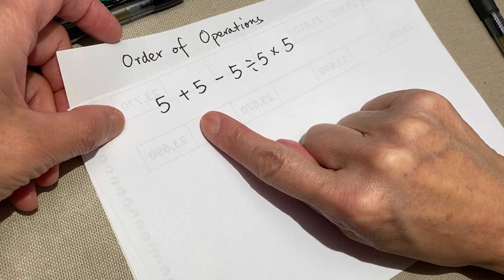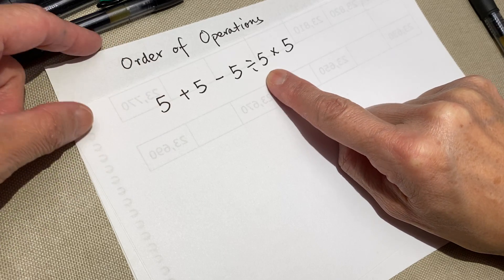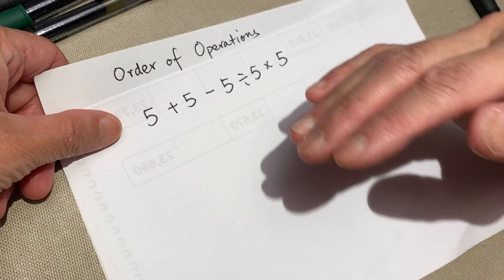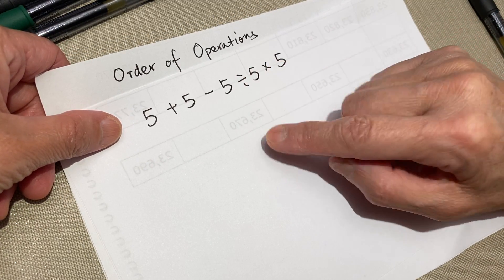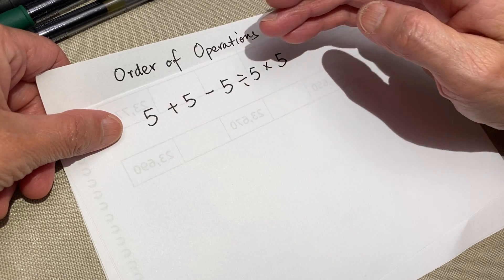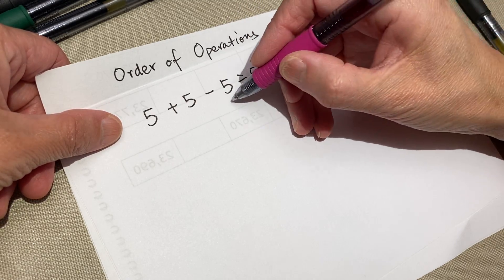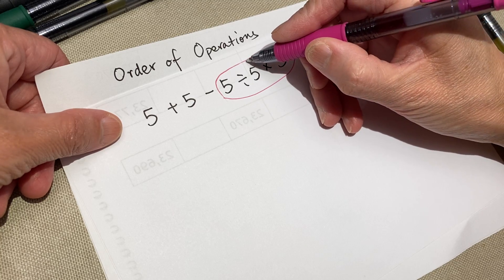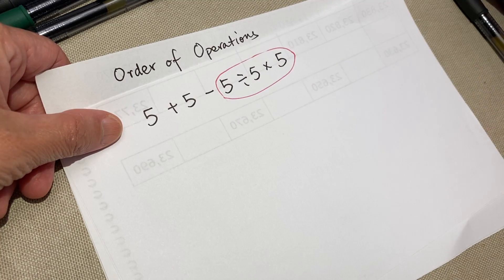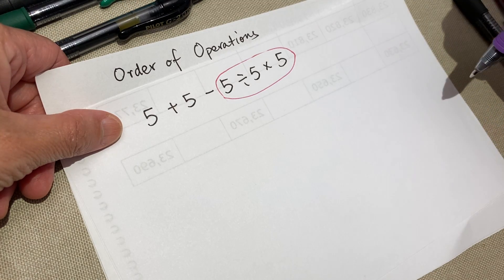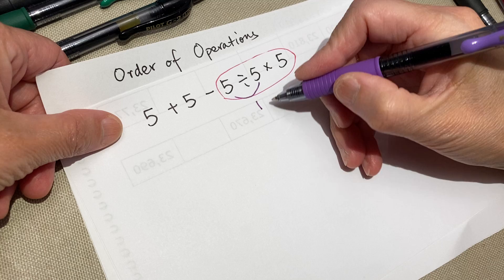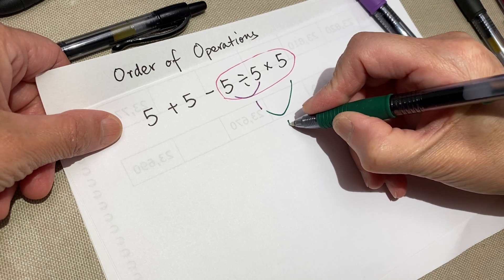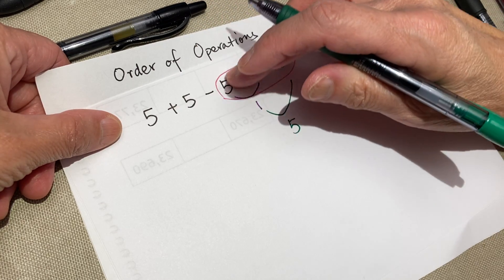So when we see it, we know we need to do the multiplication and division first. Multiplication and division, they are equal in the hierarchy. So you can do them no matter first times or first divide, but they are the first step. You need to figure out this cluster because it's a multiplication and division together, this cluster. Five divided by five equal to one. I will change another color. This is one. And one times five becomes five. So all together, the final result of this cluster is five.